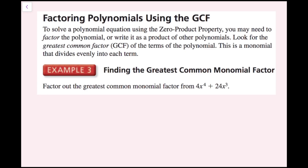Factoring polynomials using the greatest common factor. To solve a polynomial equation using the zero product property, you may need to factor the polynomial — write it as a product of other polynomials. Look for the greatest common factor, or GCF, of the terms. This is a monomial that divides evenly into each term. For example 3, we're going to factor out the greatest common monomial factor from 4x to the fourth power plus 24x cubed.